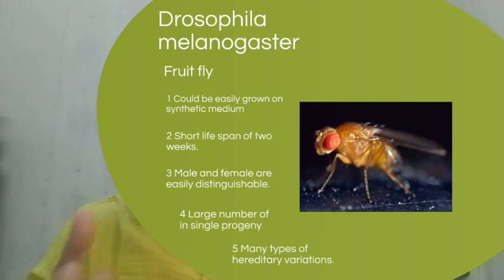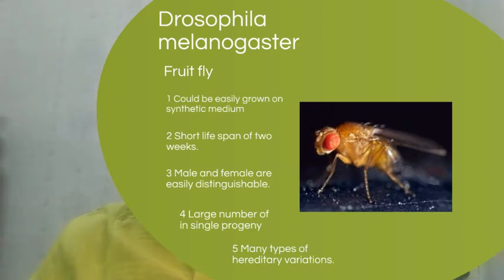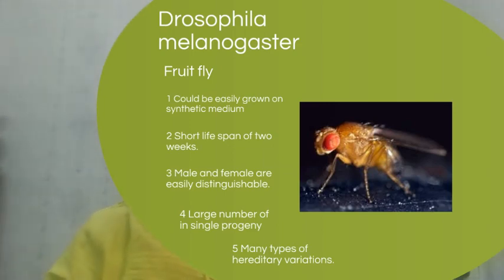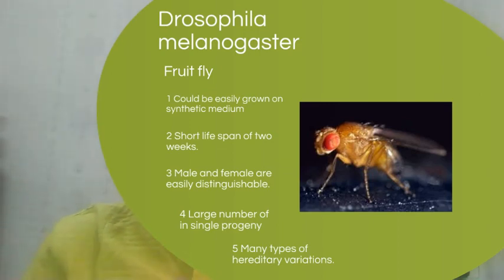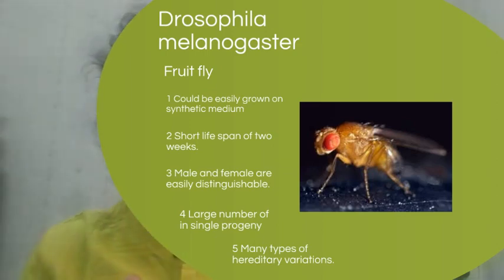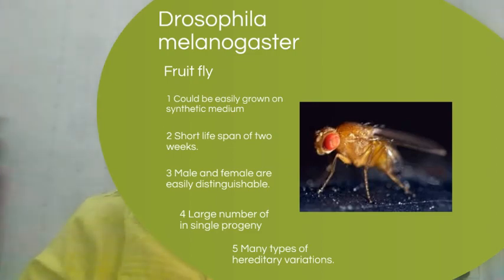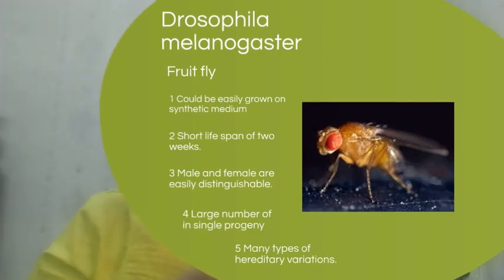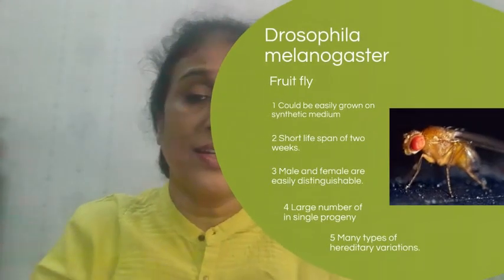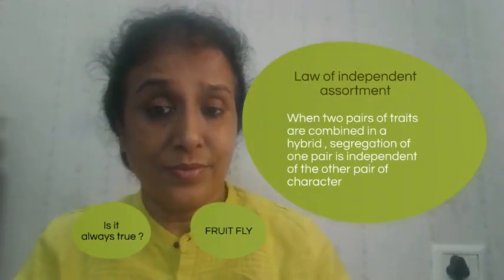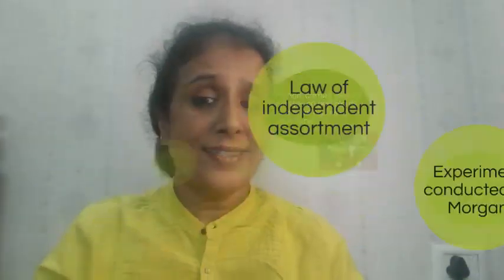Their lifespan is just two weeks, as compared to two to three months for the pea plant. Male and female can be easily distinguished, a large number of offspring are produced in a single progeny, and there are various contrasting traits such as red eye, white eye, brown body, yellow body, normal wing, and miniature wing.